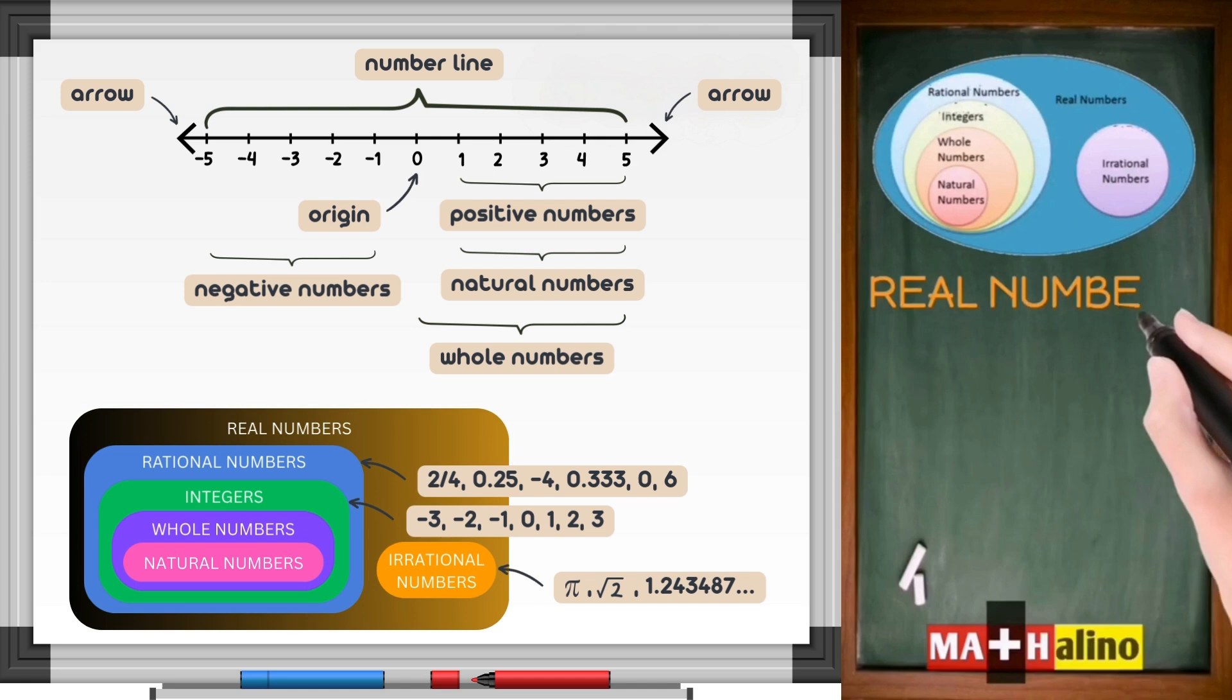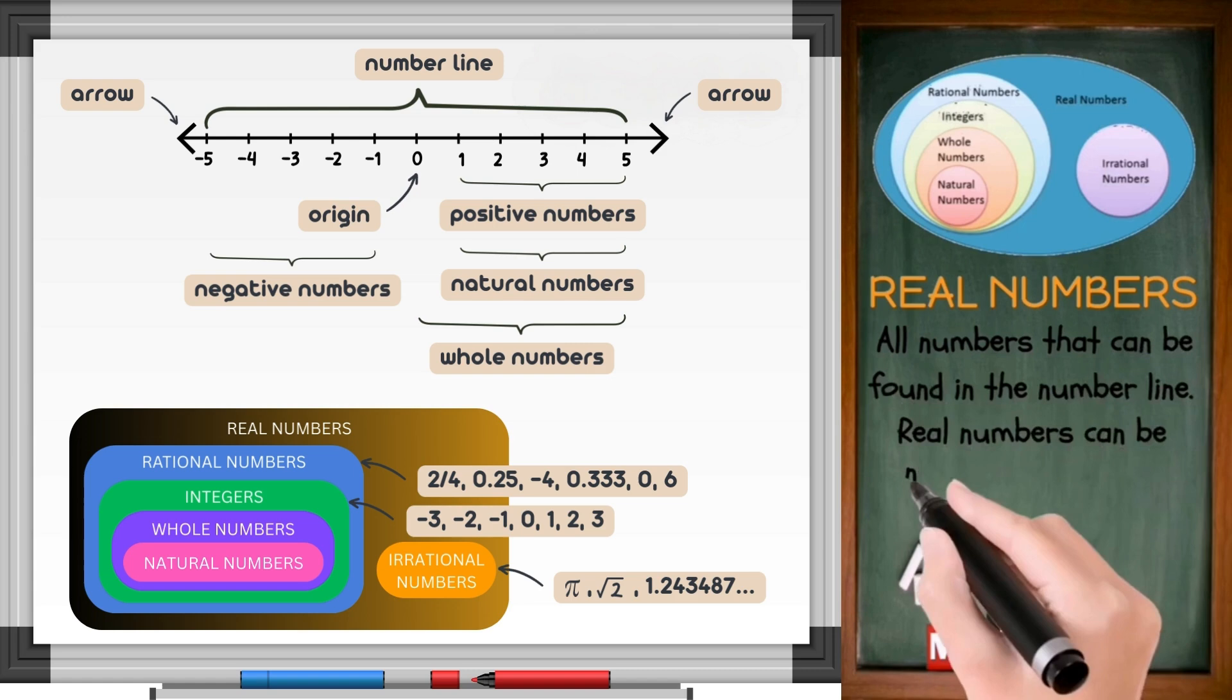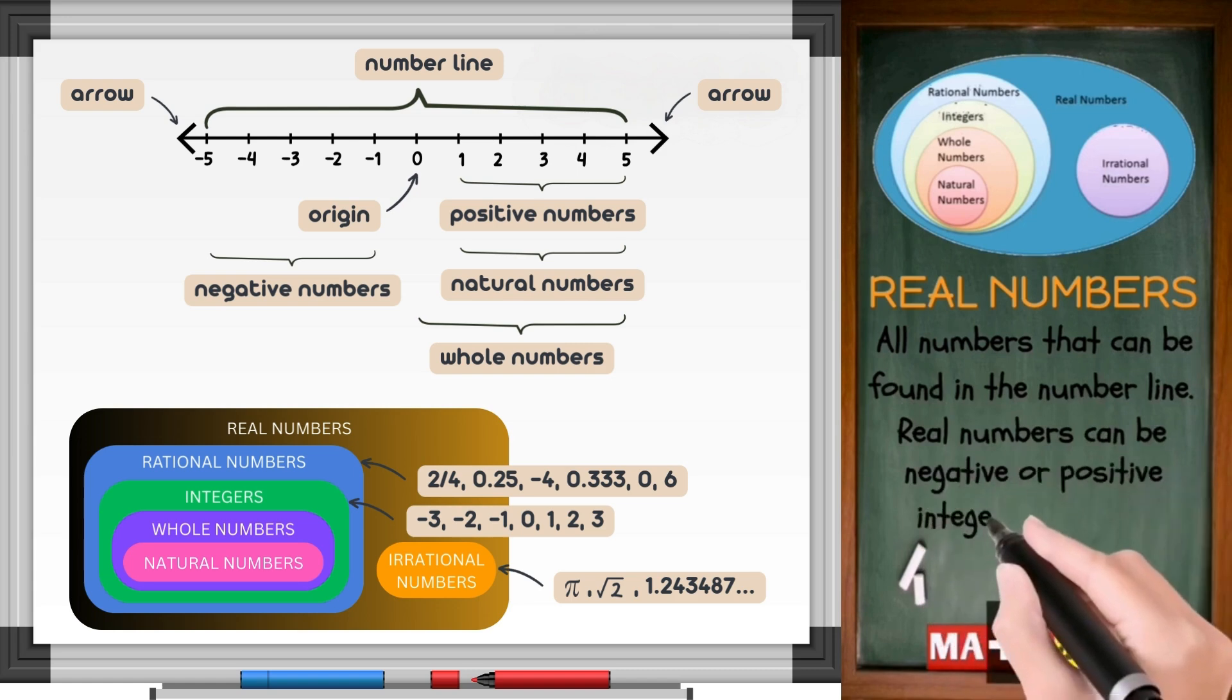Real numbers. All numbers that can be found in the number line. Real numbers can be negative or positive. Integers, decimals, or fraction.